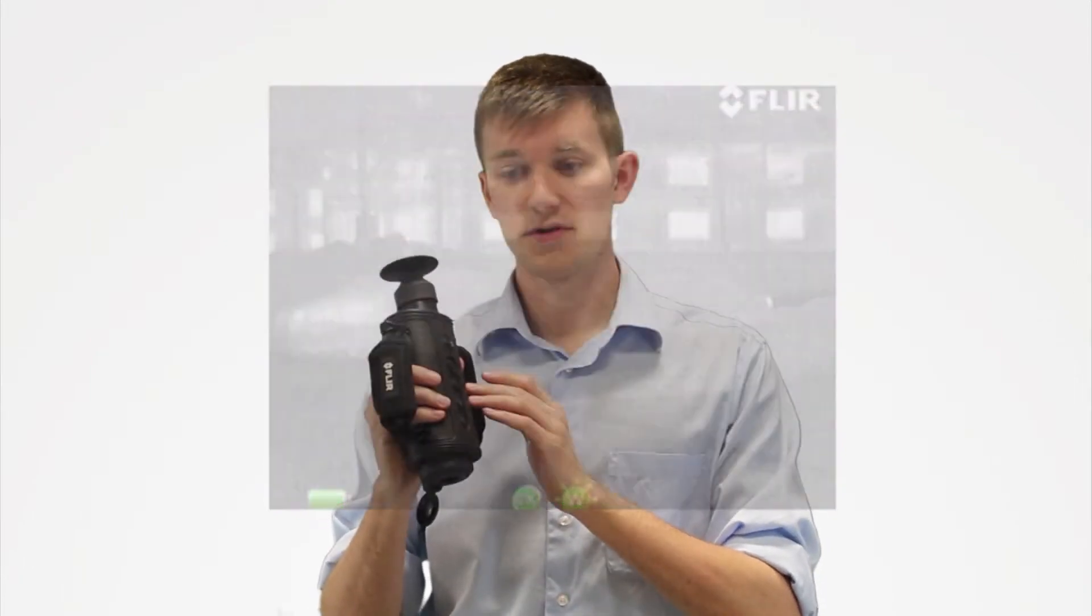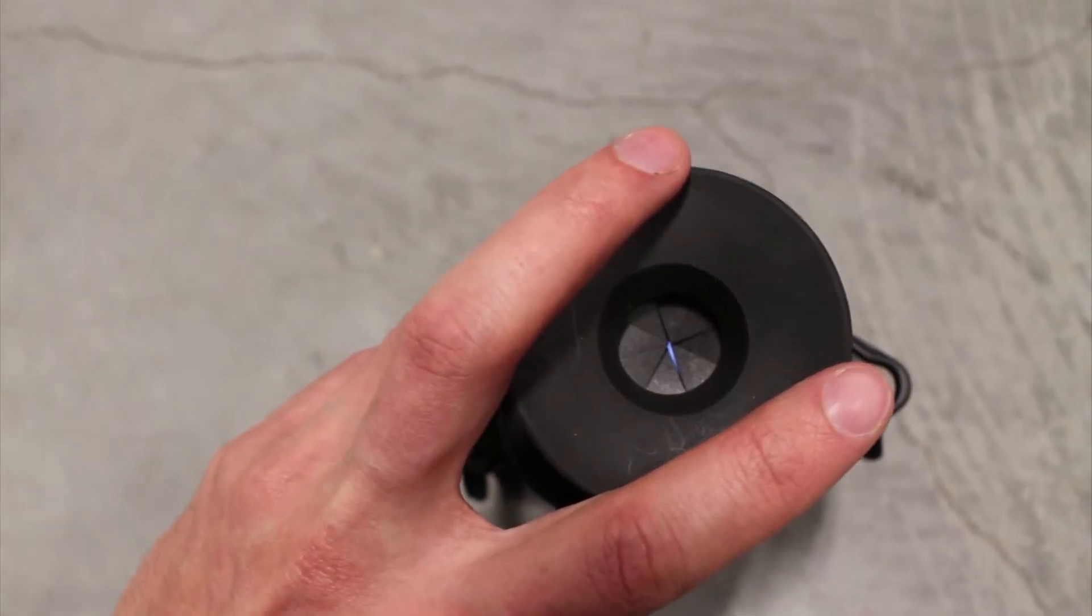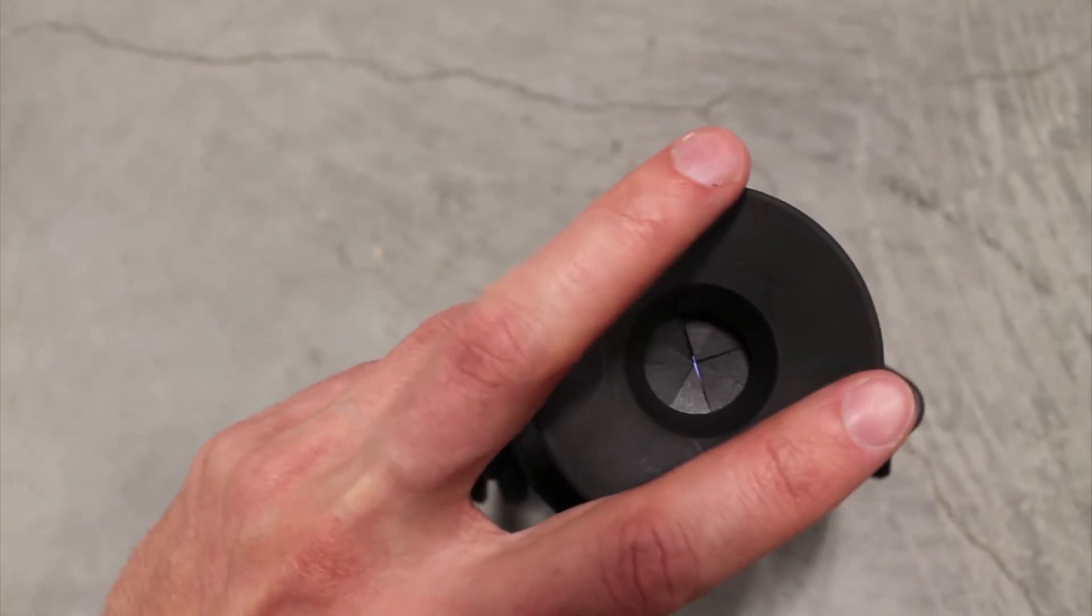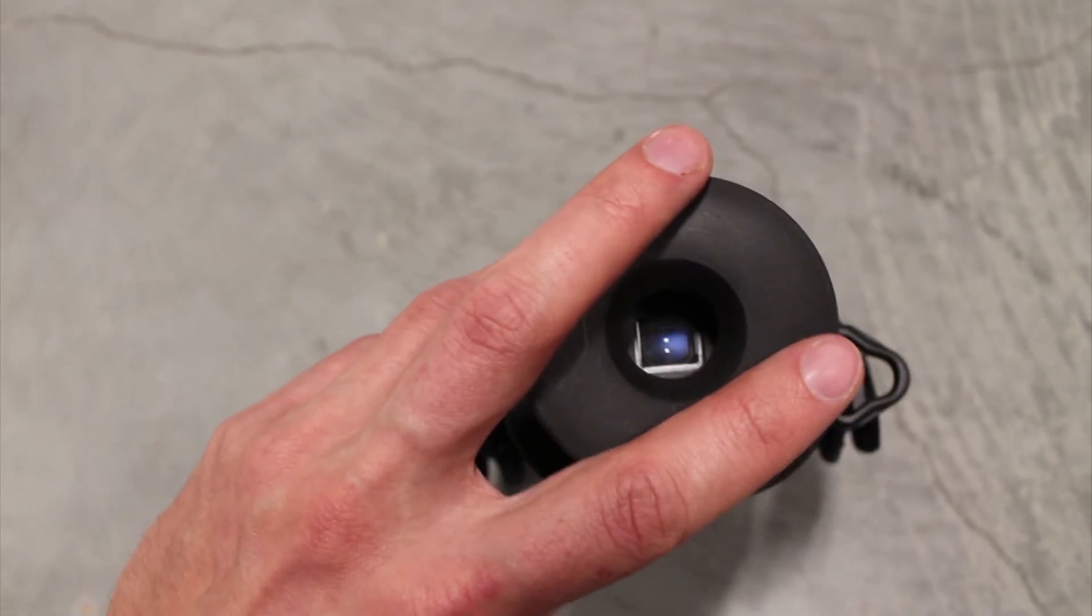The unit itself is auto-focusing but you've got a diopter on the side to adjust for your eyes. The eyepiece on this uses an iris system to block the light from the screen when you're not looking through it.